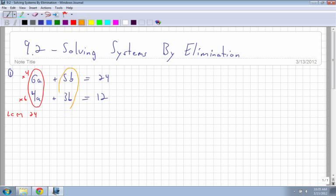Otherwise, you could look at the values in front of b. And you would say, what's the LCM of 5 and 3? Well, it's 15. What do I multiply 5 by? Well, you multiply it by 3. What do I multiply 3 by? You multiply it by 5. So it's up to you which one you want to do. Let's do the first one, just so I can show you how it works. Okay, so I'm going to pick 4 and 6.